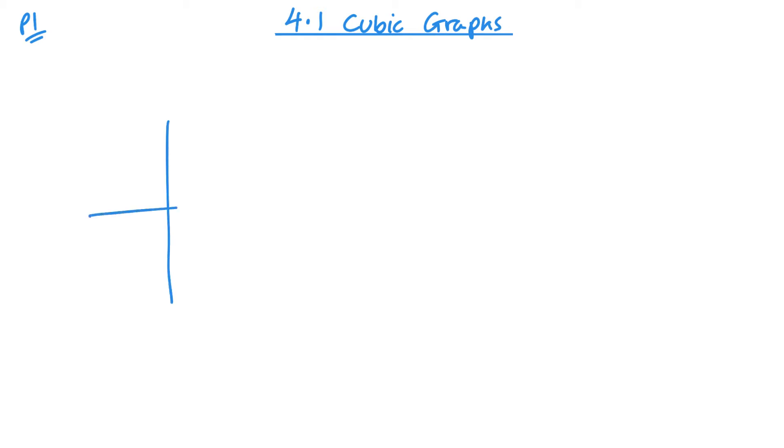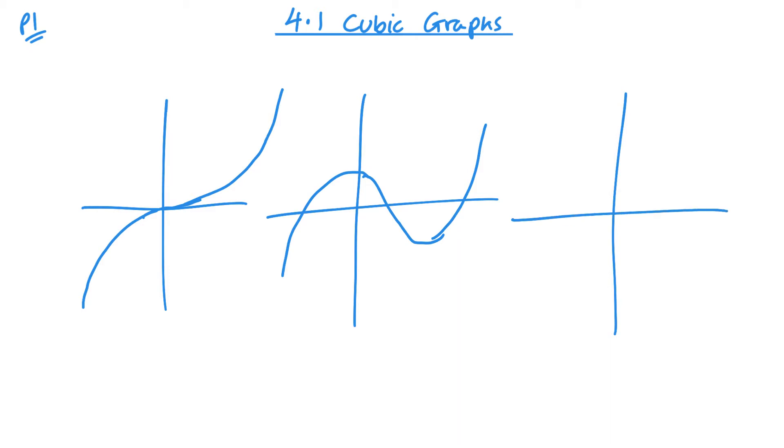So it could look very much like this, almost like a tan graph but probably not quite as steep, kind of maybe a bit more of a curve. It can also take this kind of form. It could also be touching one of the axes, like the x-axis there and bouncing off it.